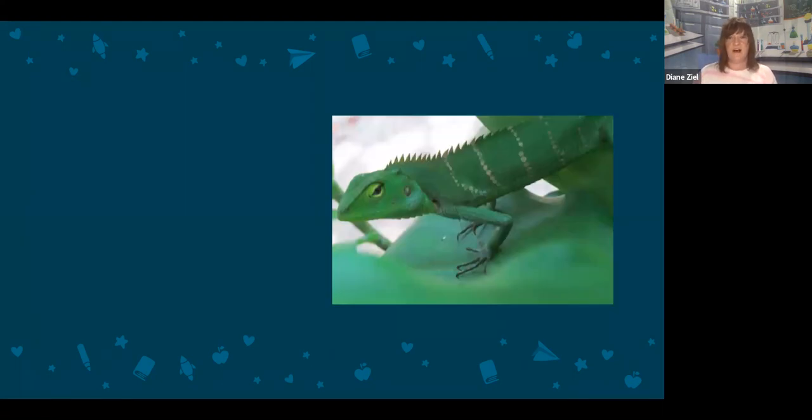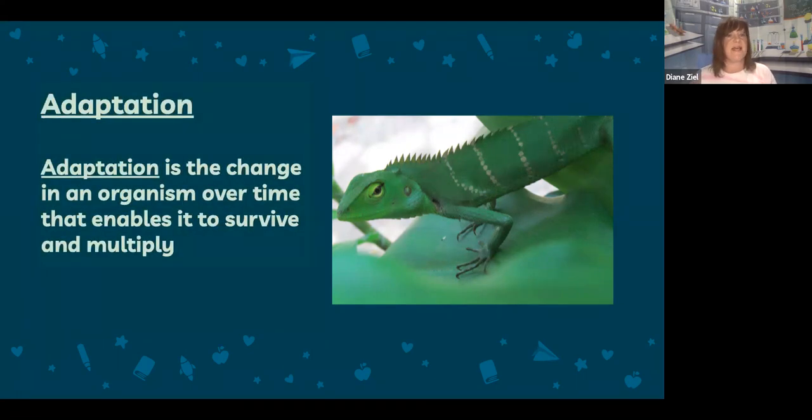Here you see a picture of an animal who has changed its coloring to green in order to protect itself. What is this an example of? If you said an adaptation, you are correct. Adaptation is the change in an organism over time that enables it to survive and multiply.